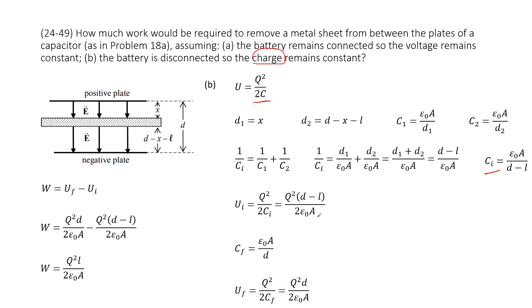Inputting C_initial gives U_initial, and similarly we get the final capacitance. Inputting C_final gives U_final. The work needed equals U_final minus U_initial. However, the answer contains Q, and we don't have Q in the problem — only the battery's voltage V is given. So we need to replace Q with V.